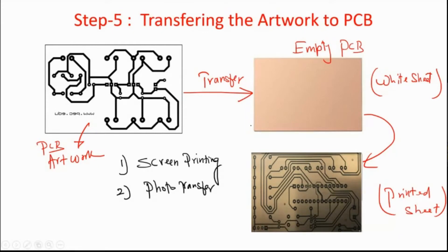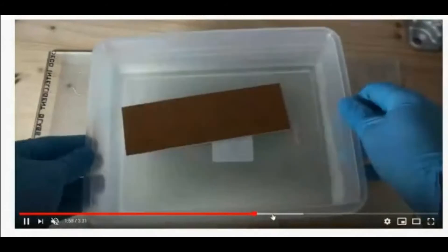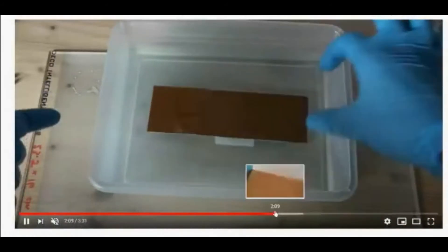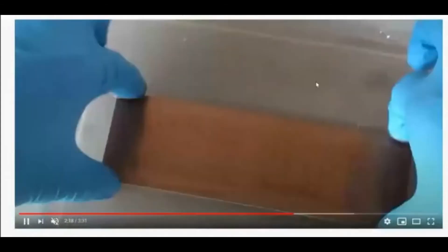The second method is photo transfer, similar to old film photography. A photosensitive material is applied on top of the PCB board, which is then exposed to ultraviolet light. The light-sensitive areas are washed away during development using a photo developing solution, leaving the circuit transferred onto the board.